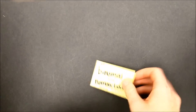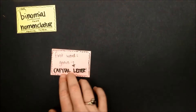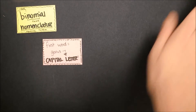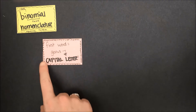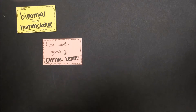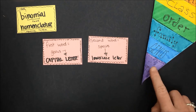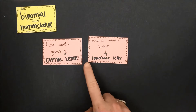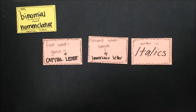So how do you write a scientific name in our system of binomial nomenclature, which means two-name naming system? There are a certain set of rules to follow. The first word is the name of the organism's genus — the second most specific level of organization — and it's always written with a capital letter to start. The second word is the species name, our most specific taxon, and this is always written with a lowercase letter. The last rule is that it's written in italics.